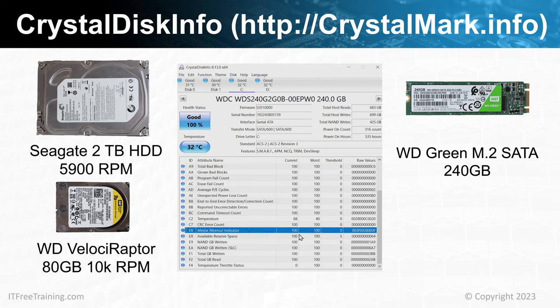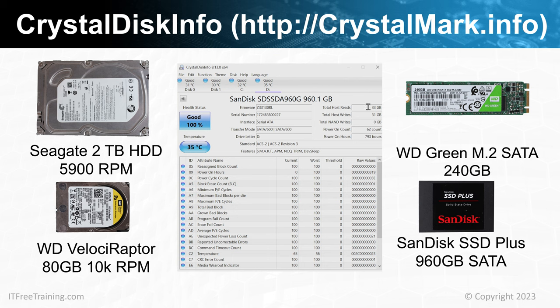You can also look at other measures such as the media wear out indicator. On most solid state drives this will be a percentage, with 100% being the best — lower values mean the drive is closer to needing replacement. This solid state drive demonstrates how inconsistent SMART can be: this figure is not a percentage, and it is unclear what it actually represents. Thus, when you start working with SMART data, don't trust what you are reading until you can verify what is being reported and what it means. There is also a big difference in what is reported by different storage devices when it comes to SMART.